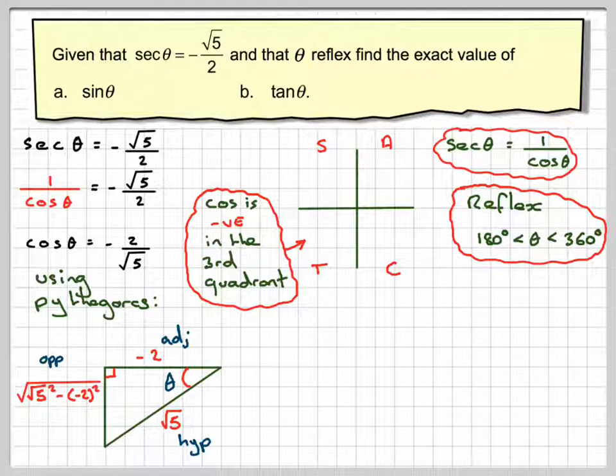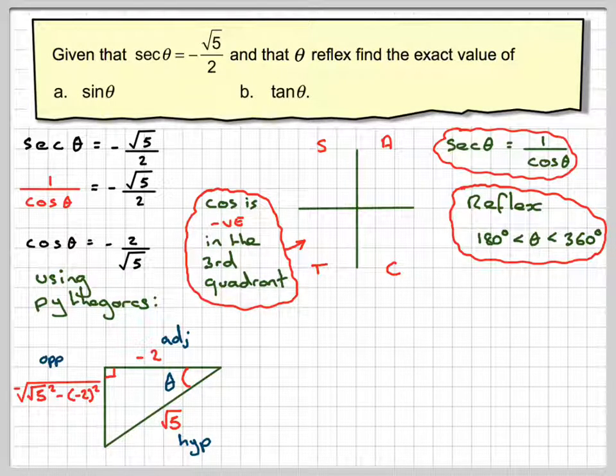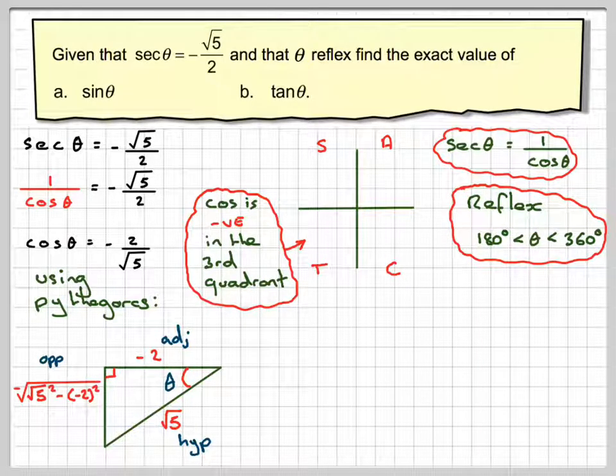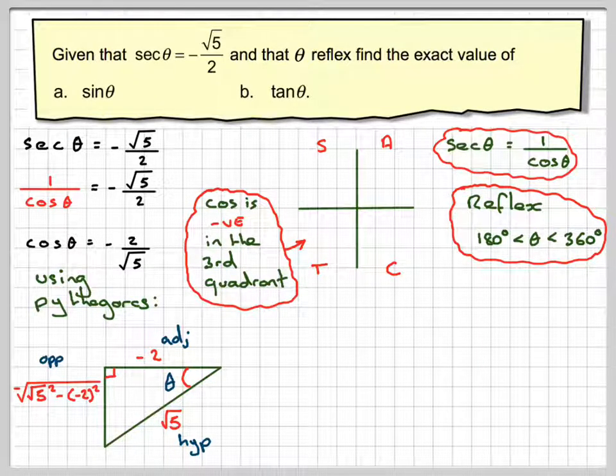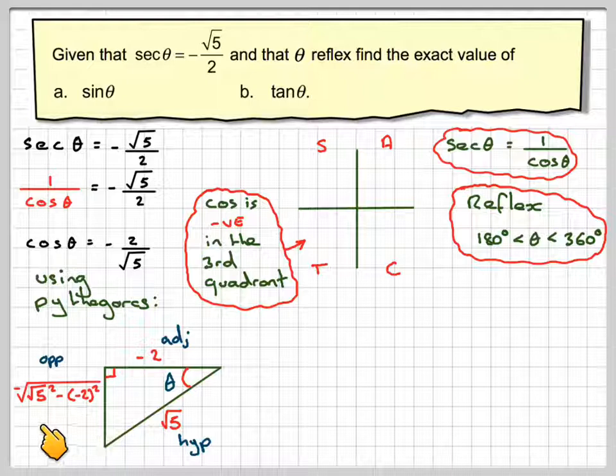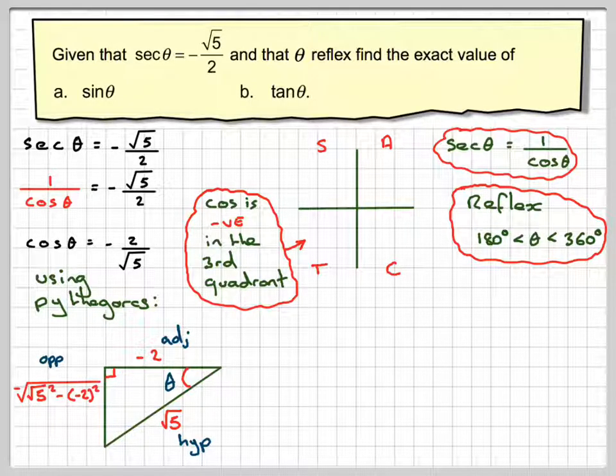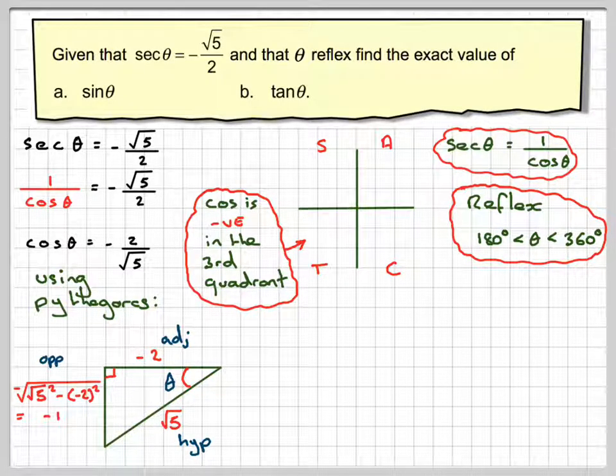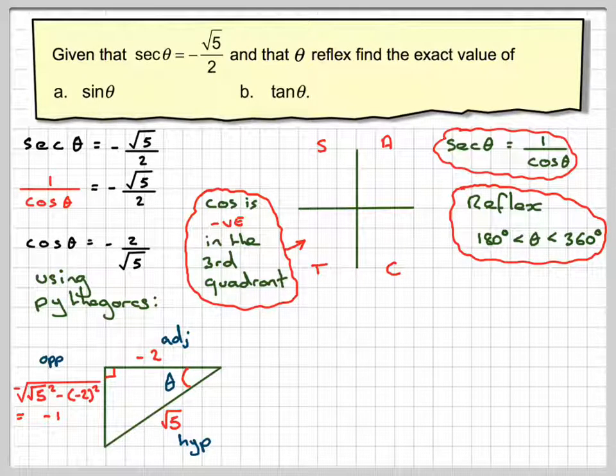okay, because this is negative and this is negative. Root 5 squared is 5, and then minus 2 squared is 4. 5 minus 4 gives me 1. The square root of 1 is 1, so this will become minus 1.